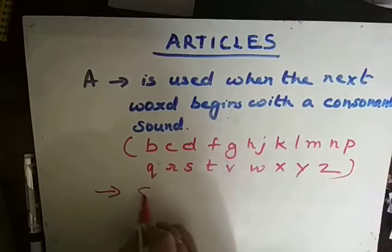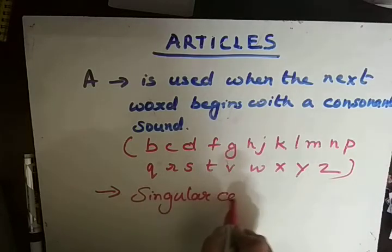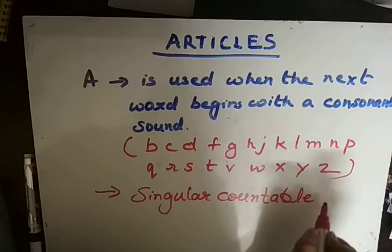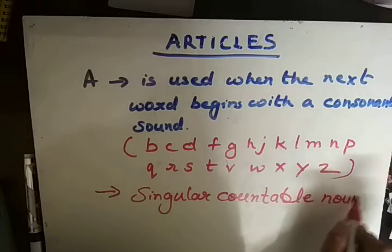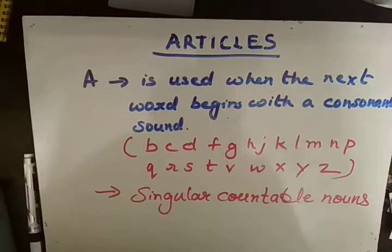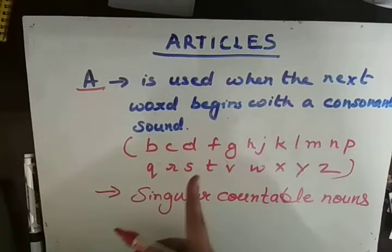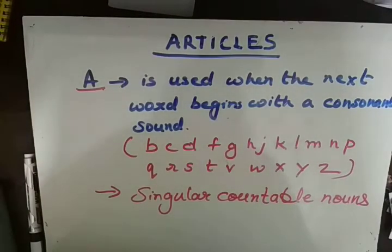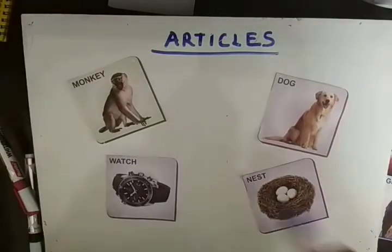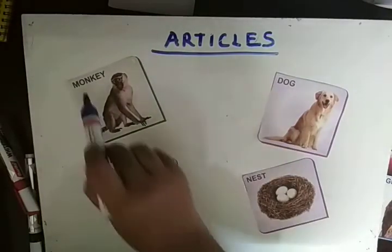A is used before singular countable nouns. Since A means one, it is used with singular nouns — meaning just one — and countable means things we can count. Let's see the examples. Here I have placed four flashcards: monkey, dog, watch, nest.